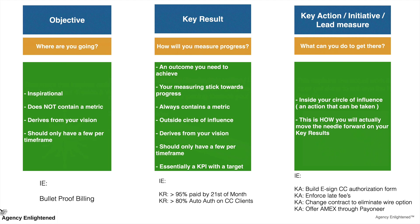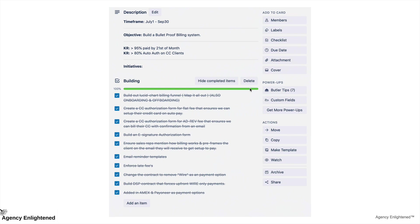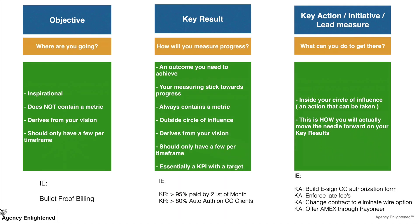How am I going to get from 50% paid to 95% paid by the 21st of the month? We could build an e-signature credit card authorization form — it makes it easier for new clients to onboard, speeds up accounts receivable, and increases the likelihood a client will sign. We'll also enforce late fees, which we haven't done even though it's in our contract. And we're going to offer American Express as a payment option. These are all key actions we're betting will help us reach that 95% target.